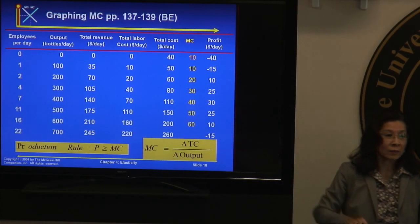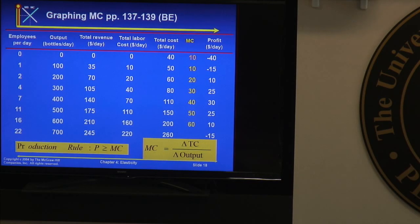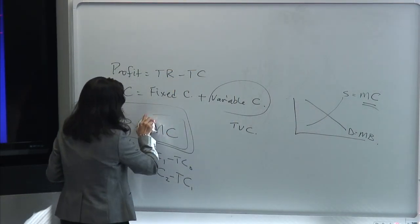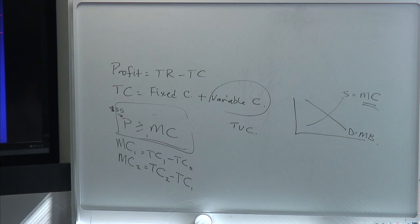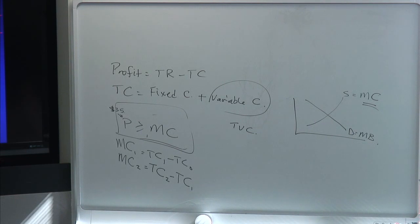So how do we solve the problem using this method? We apply the rule: P must be greater than or equal to MC. Ask yourself: is it okay for the first unit? Price is $35, MC is $10 — yes, it's greater. Second, third, fourth — yes. What about the fifth? No. So you stop right there, between MC of $30 and $40, because the price is $35. Be careful here — students sometimes get it wrong. Your answer should be the same as before: $400.